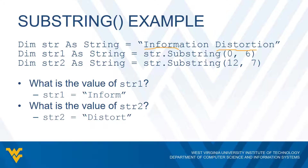What about the second string? When we call the second substring method, what's going to be stored in str2? We start at index 12, which is the capital 'D' in 'distortion', and the second argument is 7, meaning we want seven characters. That's 1, 2, 3, 4, 5, 6, 7 — the first seven characters starting at index 12. This means str2 is going to have the string 'distort'.